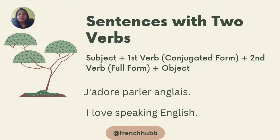Now, sentences with two verbs. Most of the time we get confused about which verb to conjugate — the first one or the second one — and sometimes we conjugate both, but no. The rule is: subject plus the first verb in conjugated form. We always conjugate the first verb, be it in any tense, whether present, past, or future. The second verb stays in its full infinitive form, plus the object.